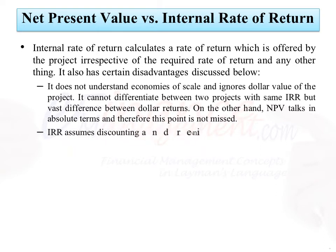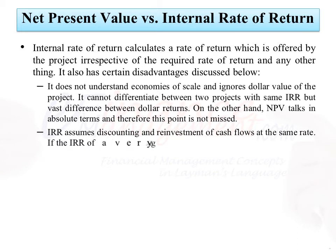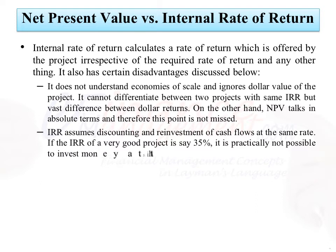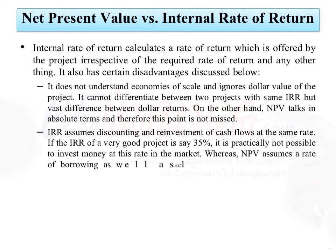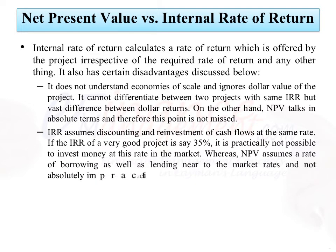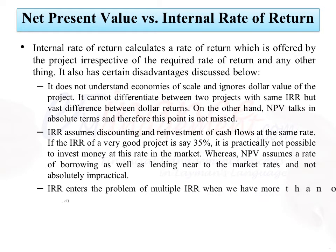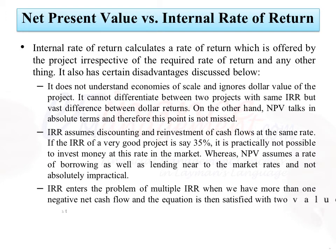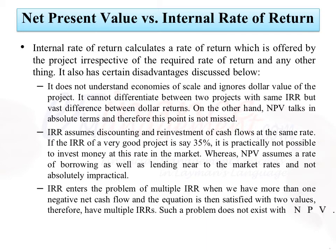IRR assumes discounting and reinvestment of cash flows at the same rate. If the IRR of a very good project is, say, 35%, it is practically not possible to invest money at this rate in the market. Whereas NPV assumes a rate of borrowing as well as lending near to market rates, which is not impractical. IRR also faces the problem of multiple IRR when there is more than one negative net cash flow and the equation is satisfied by two values, giving multiple IRRs. Such a problem does not exist with NPV.